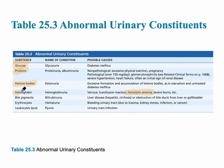Other abnormal urine components include hemoglobin, bile pigments, red blood cells, and white blood cells. White blood cells are commonly indicative of a UTI, a urinary tract infection. Diabetes mellitus is associated with sweet or sugary urine because the amount of glucose in the blood exceeds the transport maximum.